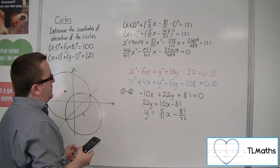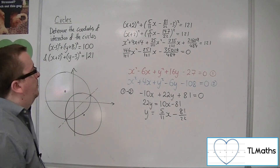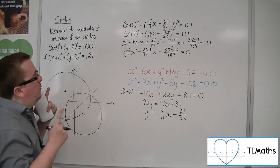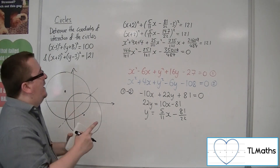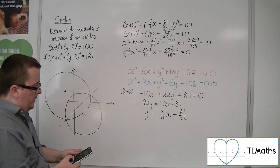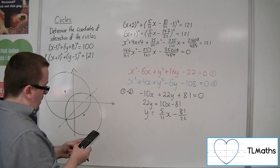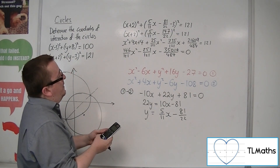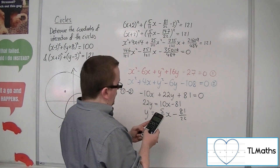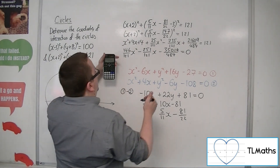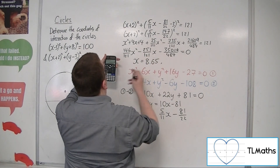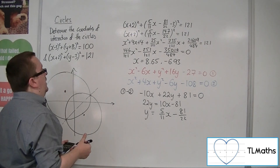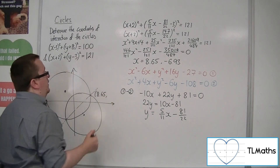In its current form that's not particularly nice, but that's as good as we can get it without multiplying through by 121. At this point we have a quadratic which we can solve. Going through the menu to solve the quadratic equation: coefficients 146 over 121, minus 251 over 121, and minus 35019 over 484. We get x values of 8.65 to 3 significant figures and minus 6.93.